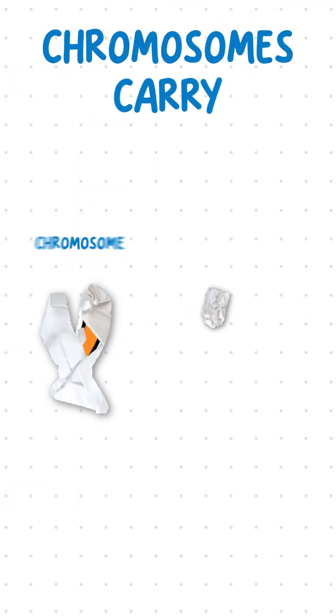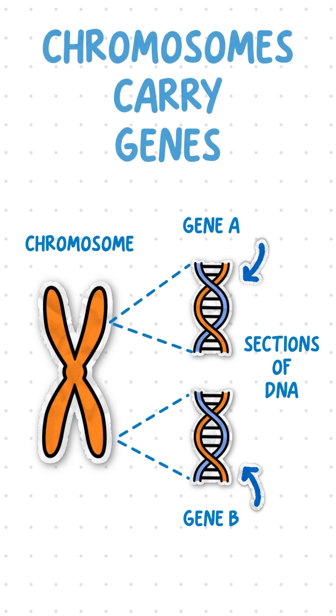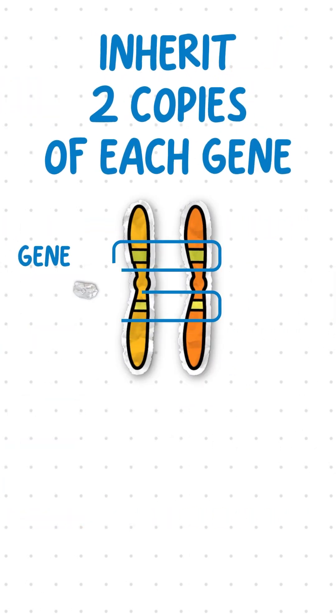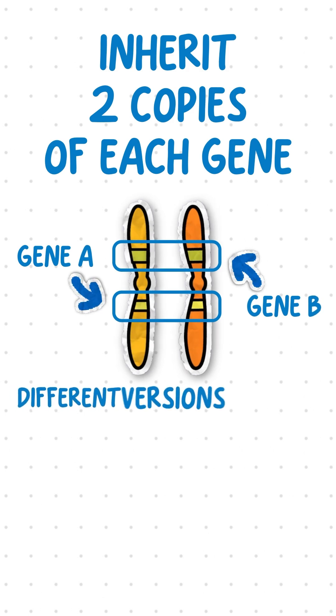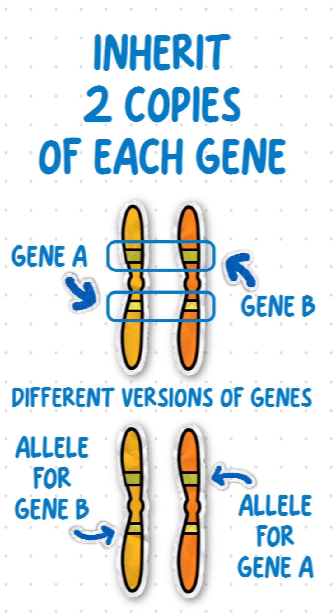Chromosomes carry genes which are sections of DNA. Each section carries instructions to make proteins. Humans inherit two copies of each gene, and the different versions of these genes are known as alleles.